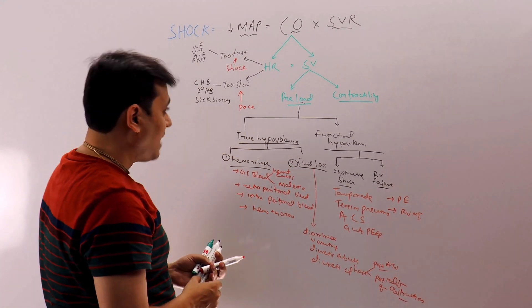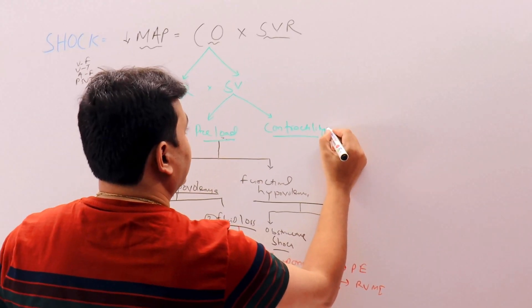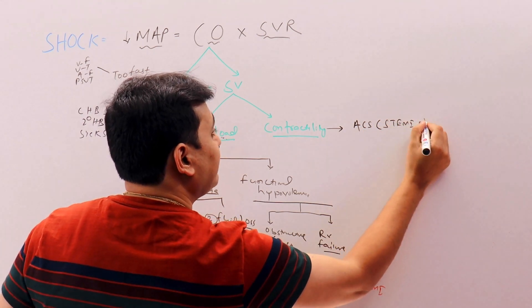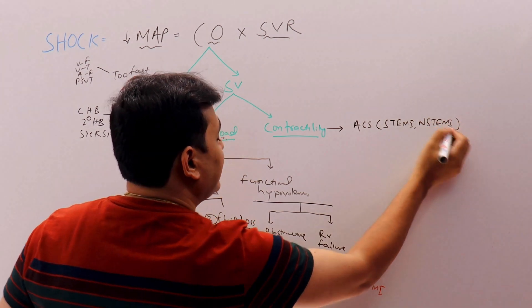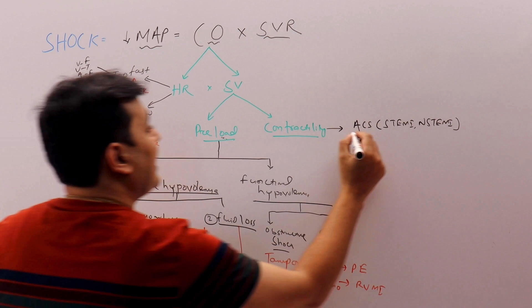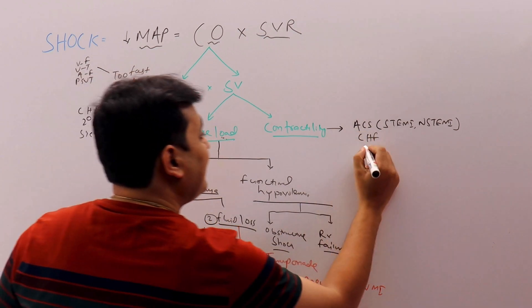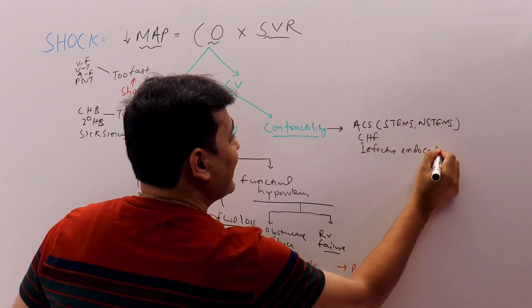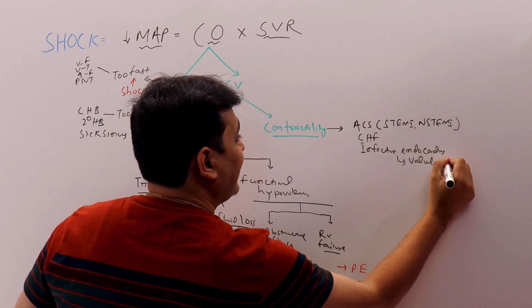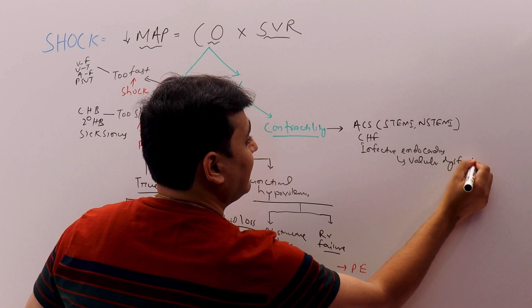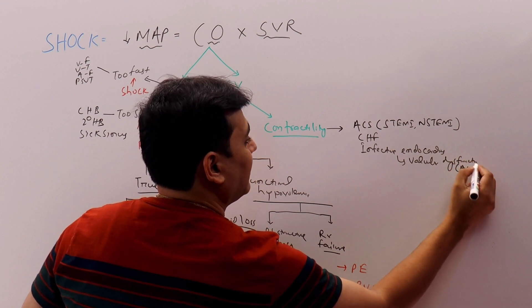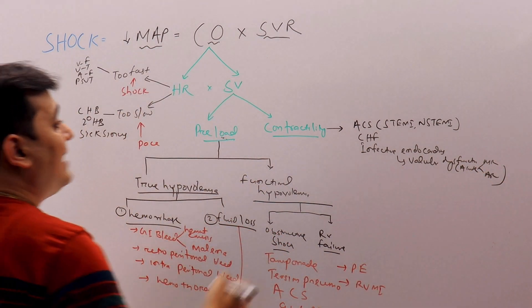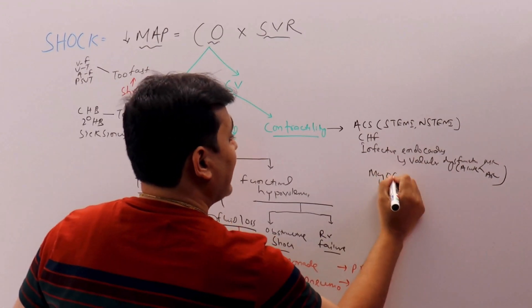Next, coming to the contractility part, we have a few causes. For example, acute coronary syndrome - you can have a STEMI, you can have a non-STEMI where the cardiac reserve is reduced, the ejection fraction is reduced, the cardiac output is reduced. You can have congestive heart failure, you can have infective endocarditis. So the infective endocarditis will produce valvular dysfunction and that can produce heart failure. Valvular dysfunction can be mainly acute MR or acute AR. And secondly you can have myocarditis, viral myocarditis, very common nowadays.